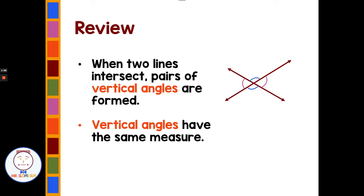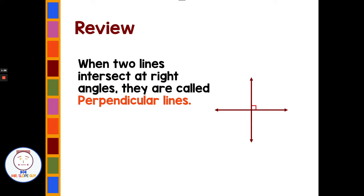When two lines intersect, they have pairs of angles that are formed. The two blue angles are vertical, and vertical angles have the same measure — they are congruent and equal. So if the blue angle on top is 100, the bottom one would also be 100. The pink angles work the same way; if one is 60, the other is automatically 60. When two lines intersect at right angles, they are called perpendicular — all four angles are 90 degrees.